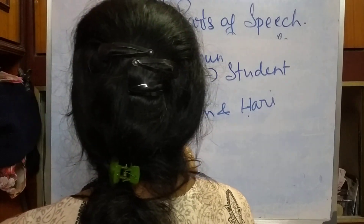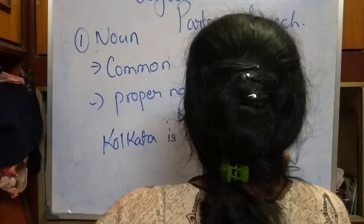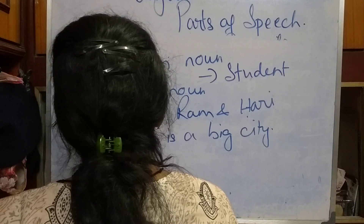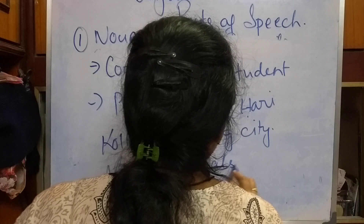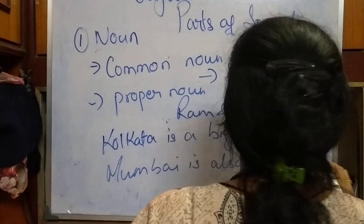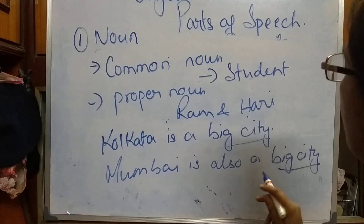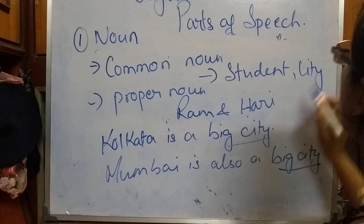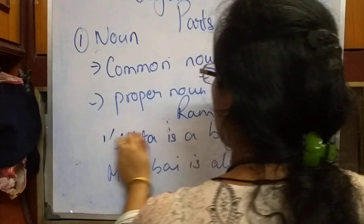Kolkata is a big city. Mumbai is also a big city. So what is common in both of them? 'City' is the common noun. And the proper nouns are Kolkata and Mumbai, which are names of places.